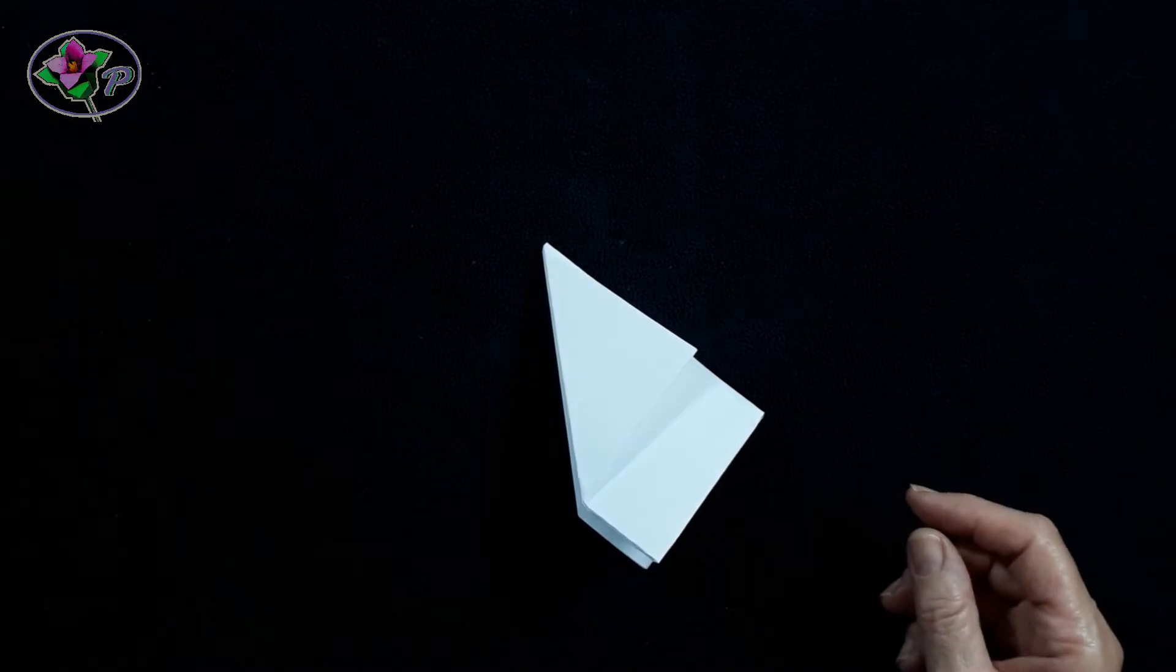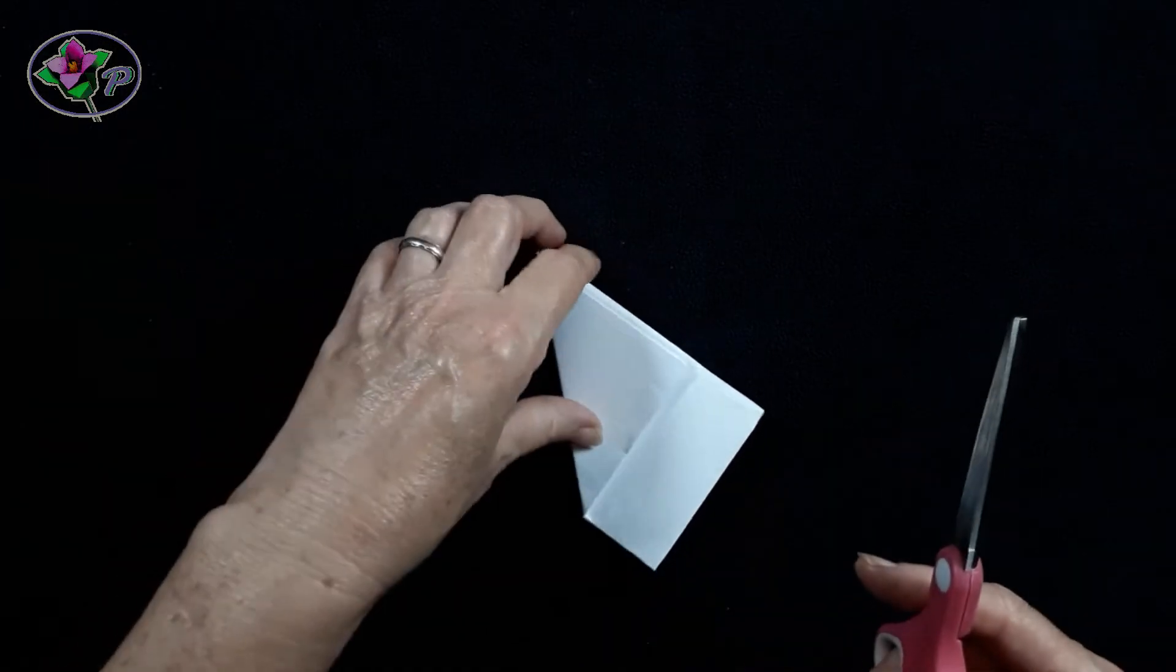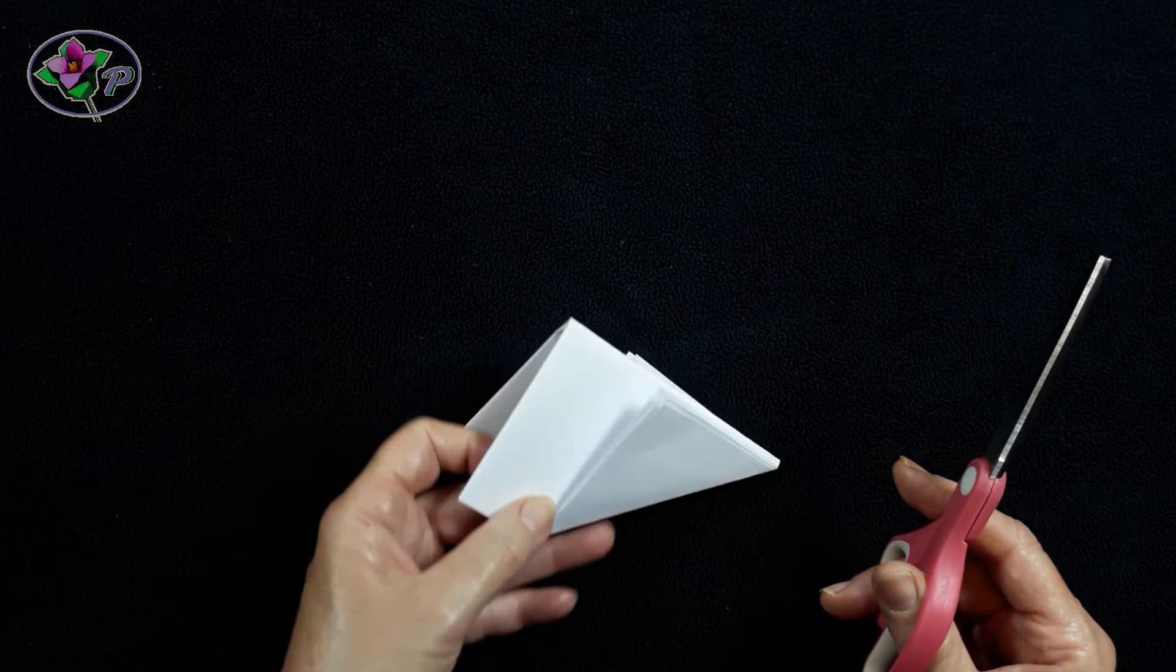Step 6. Where the paper now forms a triangle, cut out a triangle like this.